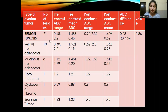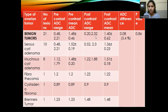ADC values were measured before and after contrast administration in both benign and malignant tumors. Among the 21 benign tumors, serous cystadenomas were 10, mucinous cystadenomas were 8, and others included fibroma and other benign tumors. The pre-contrast ADC range for benign tumors was 0.48 to 2.21, with a mean of 0.48 ± 0.6. The post-contrast ADC range was 0.20 to 2.32, with a mean of 0.4 ± 0.62. The difference in ADC between pre- and post-contrast for benign tumors was 0.08, that is 3.4%, and the p-value was 0.86, which is greater than 0.05 and therefore not statistically significant.